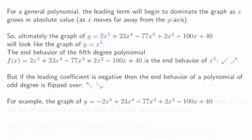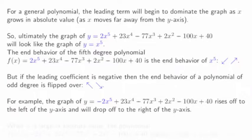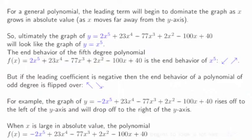And if the leading coefficient is negative, then the end behavior of the polynomial will just be flipped over. For example, the graph of this polynomial rises off to the left as we move away to the left, and drops off to the right. When x is large in absolute value, the polynomial minus 2x to the fifth plus smaller terms just begins to look a lot like minus 2x to the fifth.